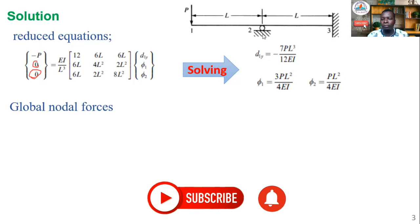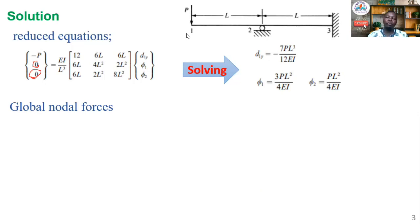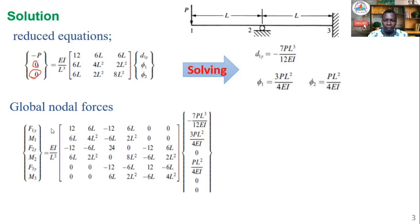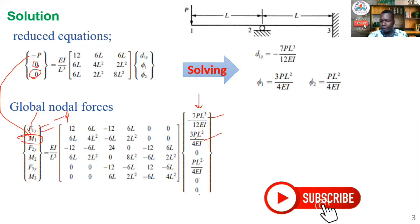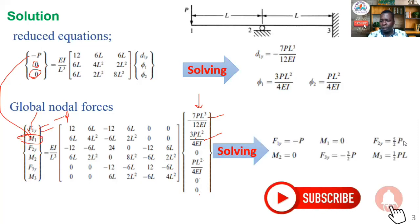Some of the nodal forces we already know — there is no moment at node one, no moment at node two, and there is a fixed moment at node three. We go back to the global finite element equation and substitute back the known displacement values. For example, F1y is already known as negative P, and M1 is zero. Substituting the known degrees of freedom, we can solve equation by equation for each nodal force.